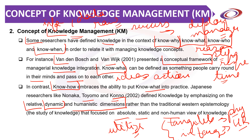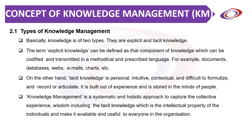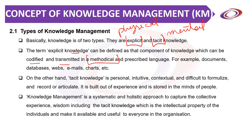We can categorize knowledge as two types: explicit and tacit. Explicit refers to something physical, while tacit refers to a mental image. Explicit knowledge is that component which can be codified and transmitted in a methodological and prescribed language — we can write it, document it, put it in databases, webs, emails, and charts. It can be seen and touched.